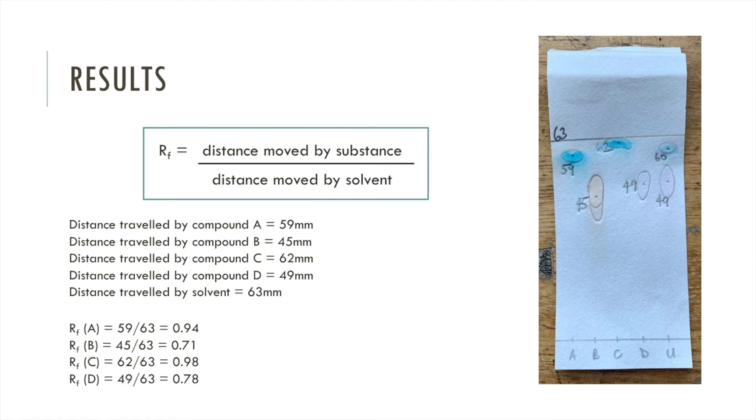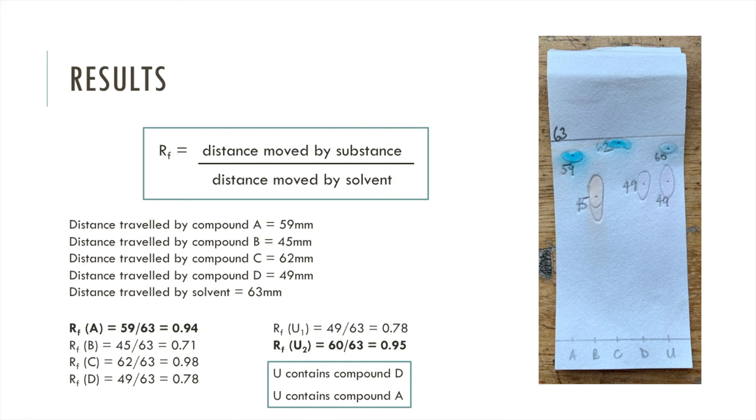U produced two spots, which means it contains a mixture of two compounds. I'm going to call the bottom spot U1 and the top spot U2. The RF for U1 is 0.78 and for U2 is 0.95. Now we can see that the RF for U1 is the same as the RF for compound D. That means that unknown mixture U contains compound D. We can see that the value for U2 is very similar to that of the RF for compound A. So that means that U contains compound A as well.